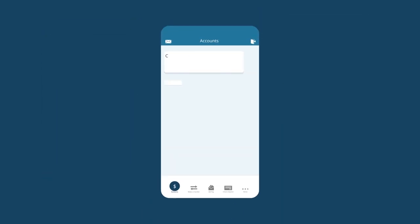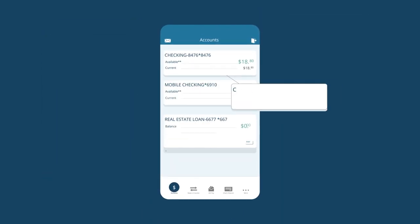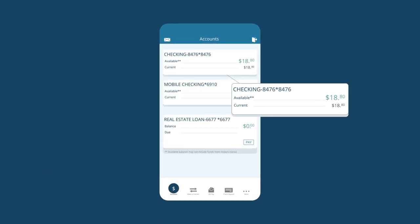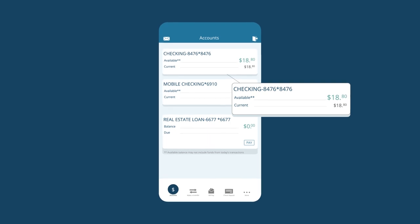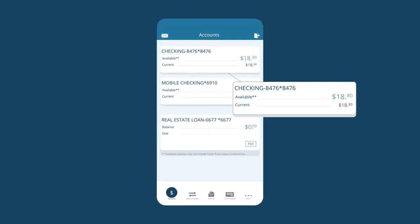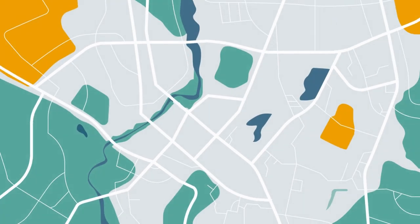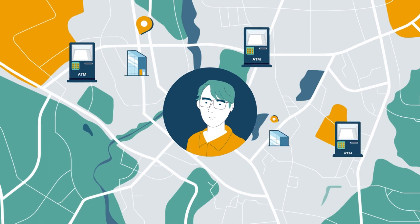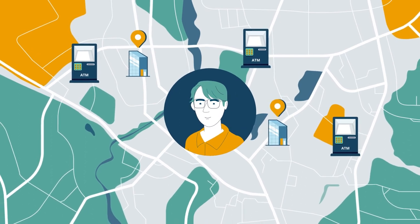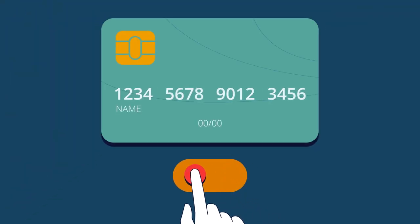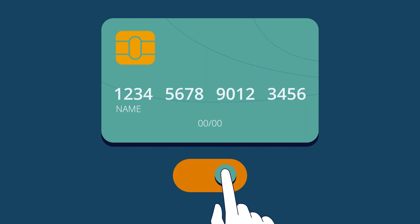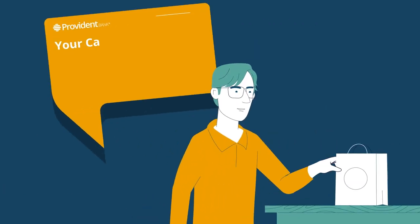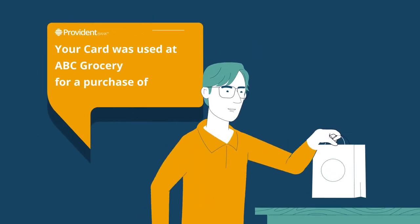The Quick Balance feature allows you to view your balance without logging in. Once logged in, you'll be able to locate the nearest banking center or ATM, turn off your debit card when it's lost or stolen, and turn it on again. Receive purchase alerts when your card is used.